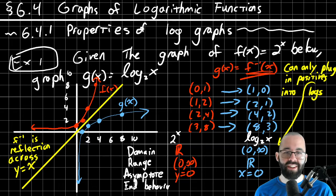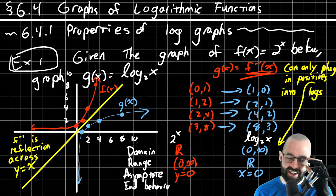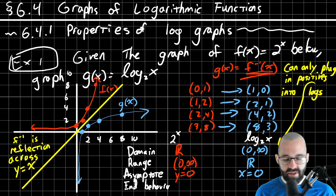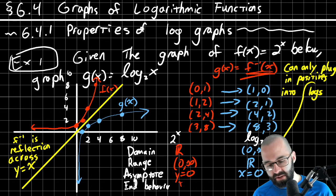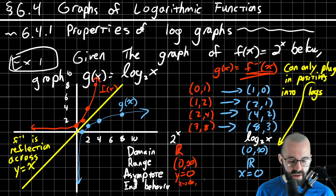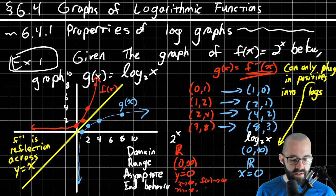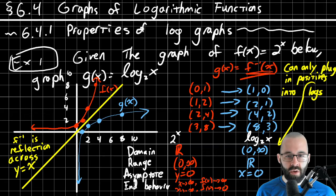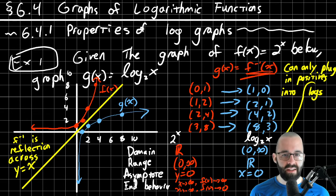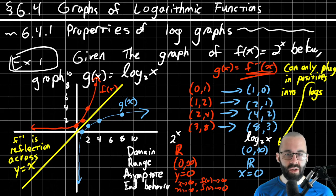For end behavior: as x goes to the right, the function goes to infinity. As x approaches negative infinity, the function approaches the asymptote, which is zero. You can do the same thing — switch x's and y's — to get the end behavior for the logarithm.